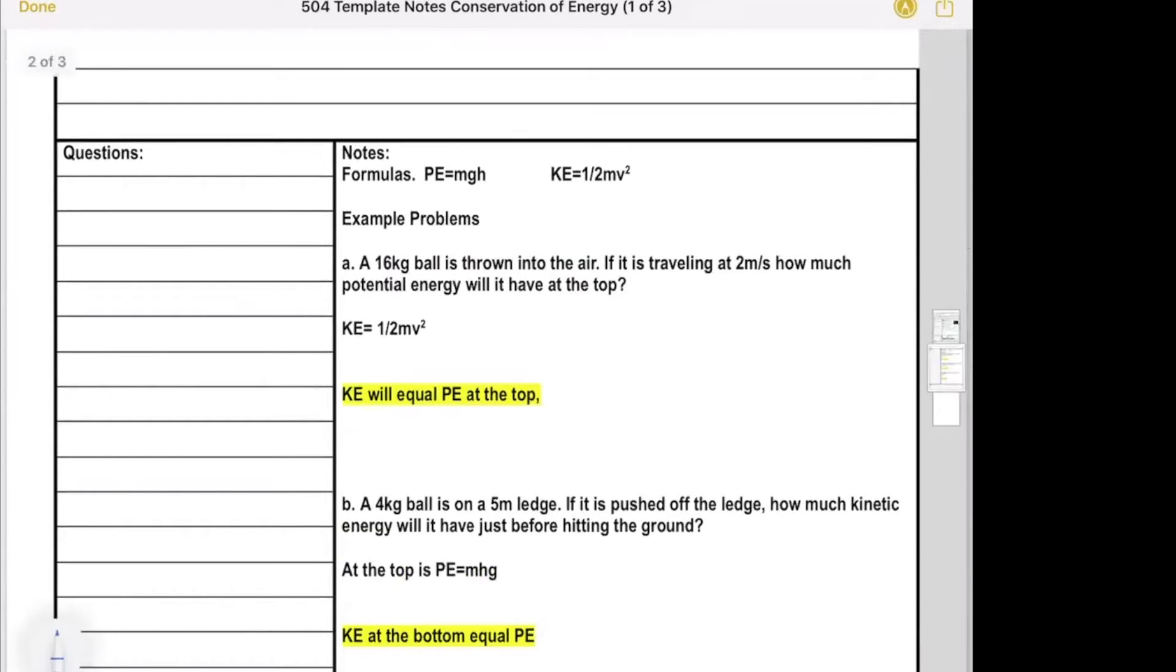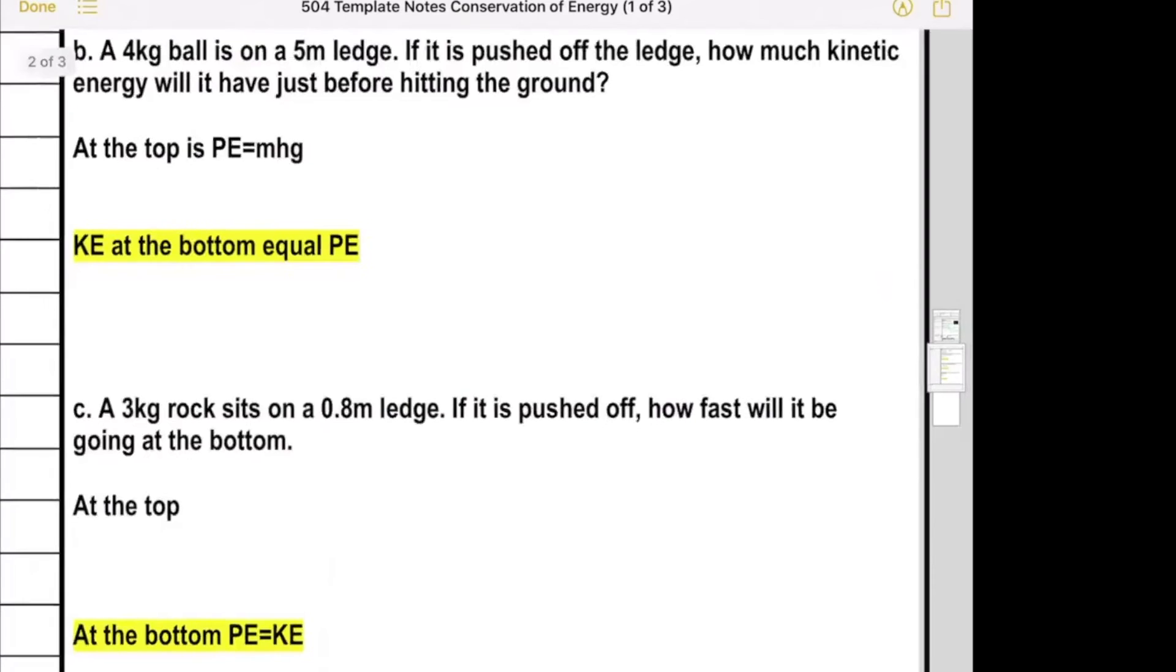The potential we already went through: it's mass times gravity times height. The kinetic is one half mass times velocity squared. How this works into the equations is if you calculated, like this, a ball is thrown in the air. If it's traveling at two meters per second, how much potential energy will it have at the top?